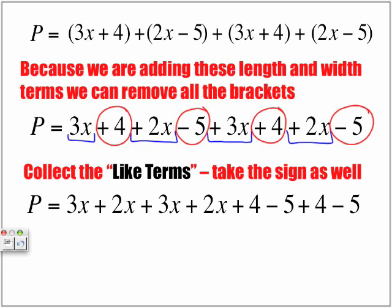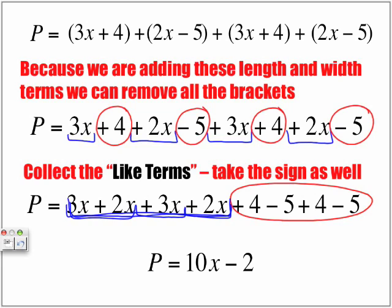What I like to do is write symbols to designate the like terms, and then I like to collect them. I've collected everything I highlighted in blue, and everything that I circled in red, I collected it. All I do now is simplify. 3x plus 2x gives me 5x, plus another 3x gives me 8x, plus another 2x gives me 10x. Our expression simplifies to P is equal to 10x minus 2. Therefore, the perimeter of that same shape is equal to 10x minus 2.